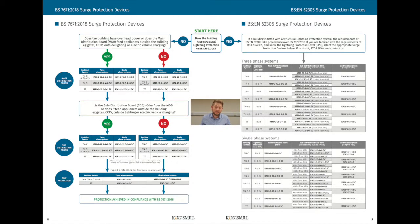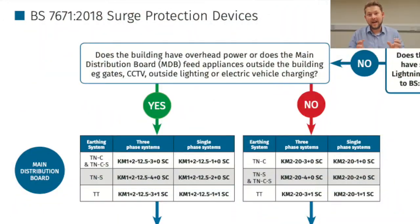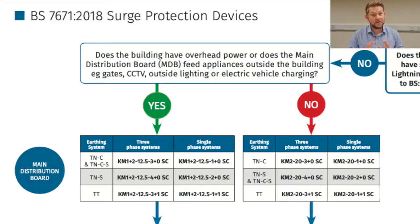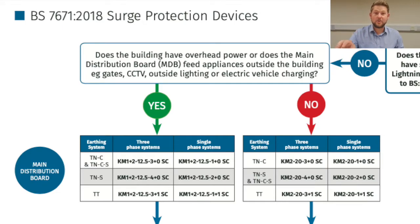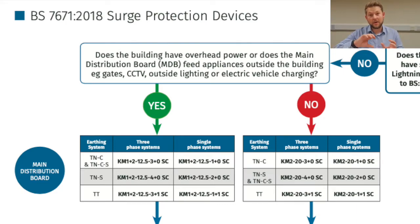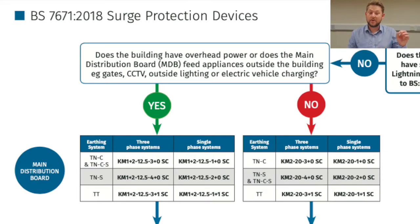If the building does not have external lightning protection installed, then we're looking at an 18th edition 7671 type device. For the main distribution board, we need to know whether the building is fed by an overhead power line, or if the main distribution board is feeding outside — for example, electric gates or EV charging points. If so, we're looking at a type 1 and 2 device. If not — so below ground, not feeding outside the building — then it will be a type 2.